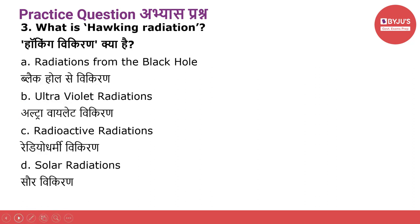Practice question number three: What is Hawking radiation? Hawking विकिरण क्या है? Option A: Radiations from the black hole. Option B: Ultraviolet radiations. Option C: Radioactive radiations. Option D: Solar radiations.